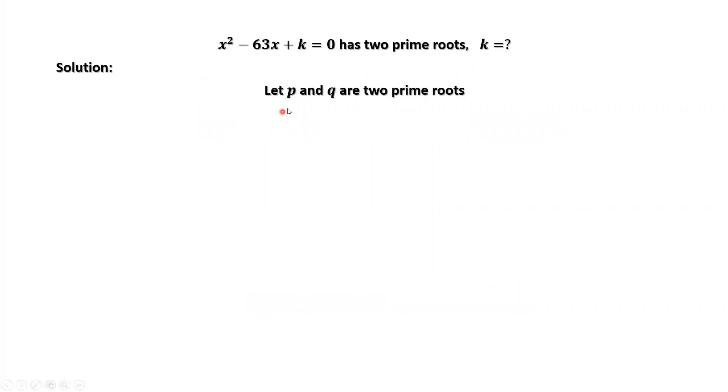We assume p and q are the two prime roots of this equation. Then we have (x - p)(x - q) = x² - (p + q)x + pq.